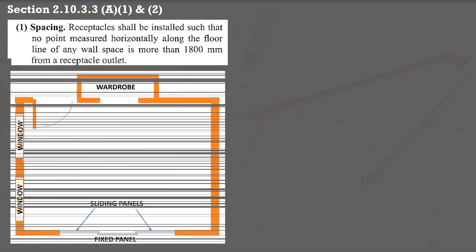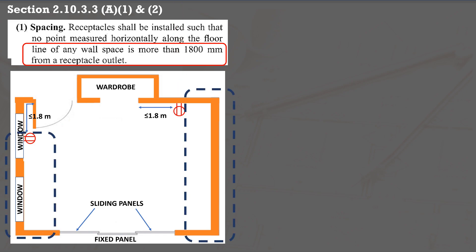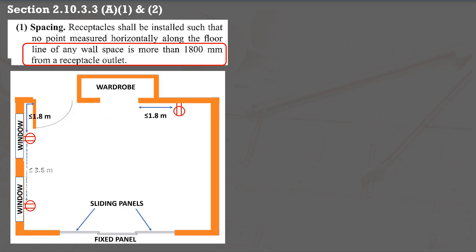Paragraph A1 specifies that receptacles are needed in every room such that no point on a wall is over 1,800 mm or 6 feet from an outlet. This means you need an outlet within 1,800 mm of a doorway, wardrobe, or fireplace. For a long wall, the maximum distance between two outlets is 3,600 mm.